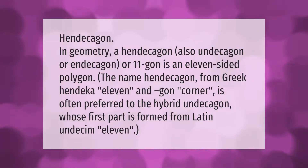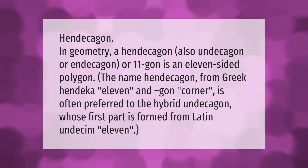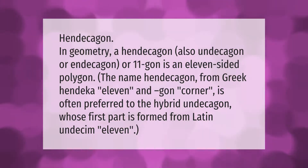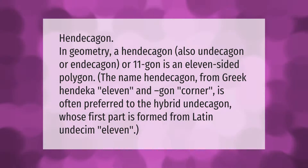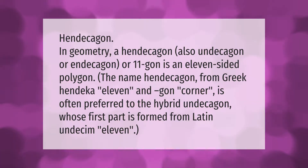In geometry, a hendecagon — also called undecagon, endecagon, or eleven-gon — is an eleven-sided polygon. The name hendecagon, from Greek hendeka meaning 11 and gon meaning corner, is often preferred to the hybrid undecagon, whose first part is formed from Latin undecim, meaning 11.